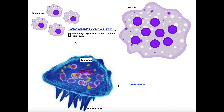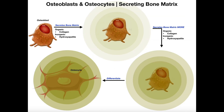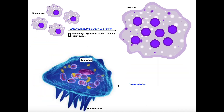Before we look at their function in detail, let's talk about where osteoclasts come from. They do not come from the osteoblast cell lineage — they are separate. In fact, their shape is very different. They actually resemble macrophages, which is where they come from.